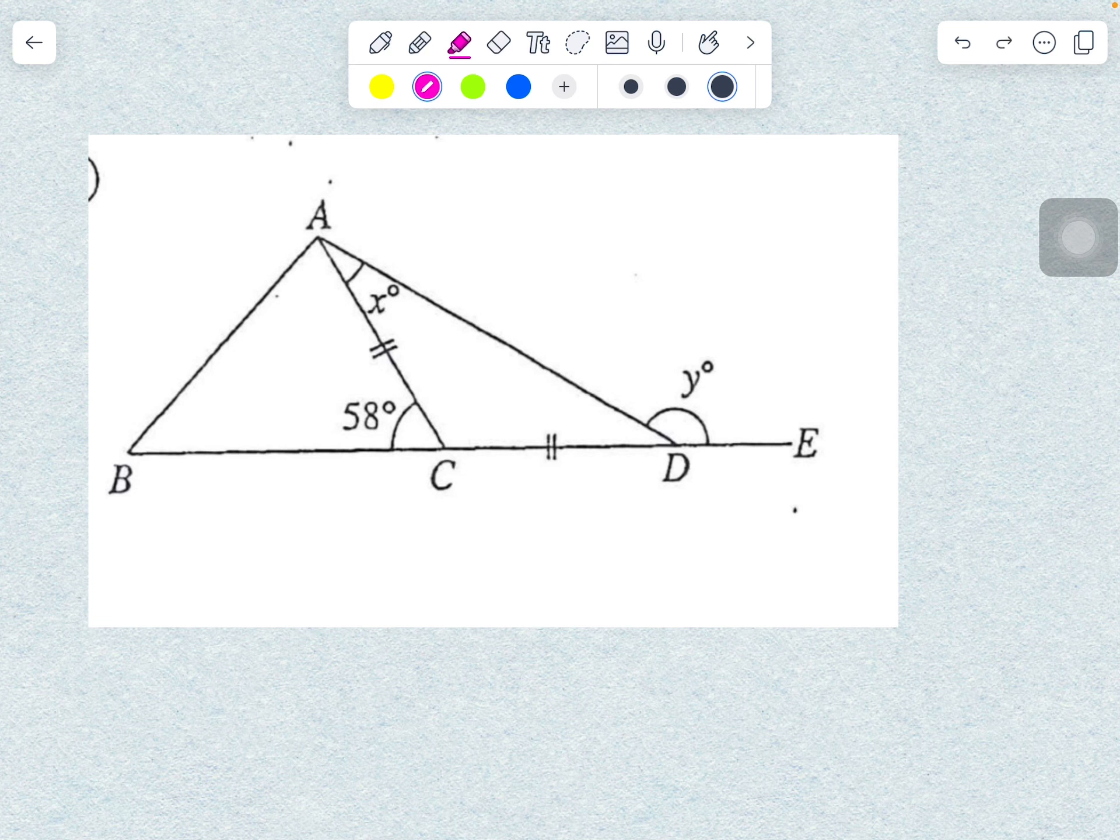First, the given triangle ACD is an isosceles triangle. So, the angle ADC is x-degree.